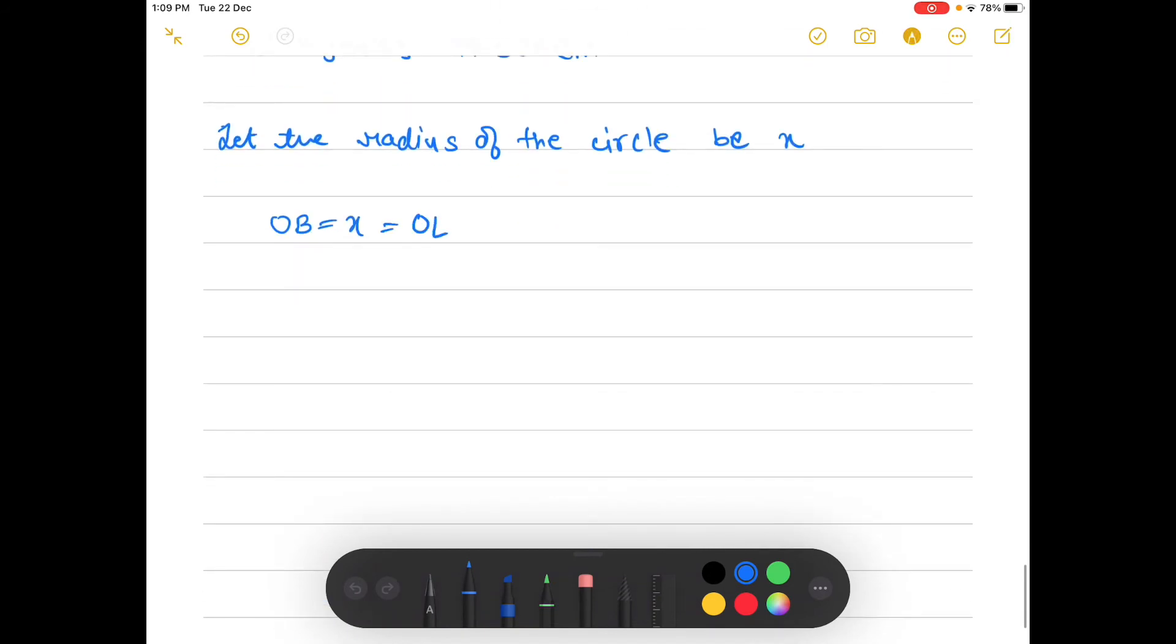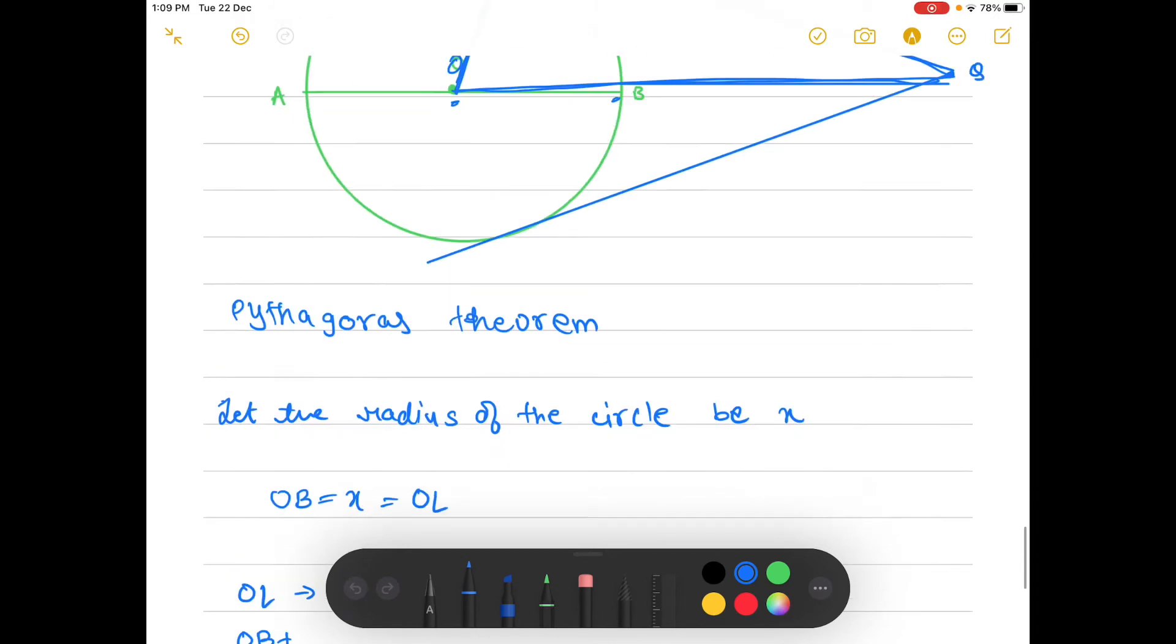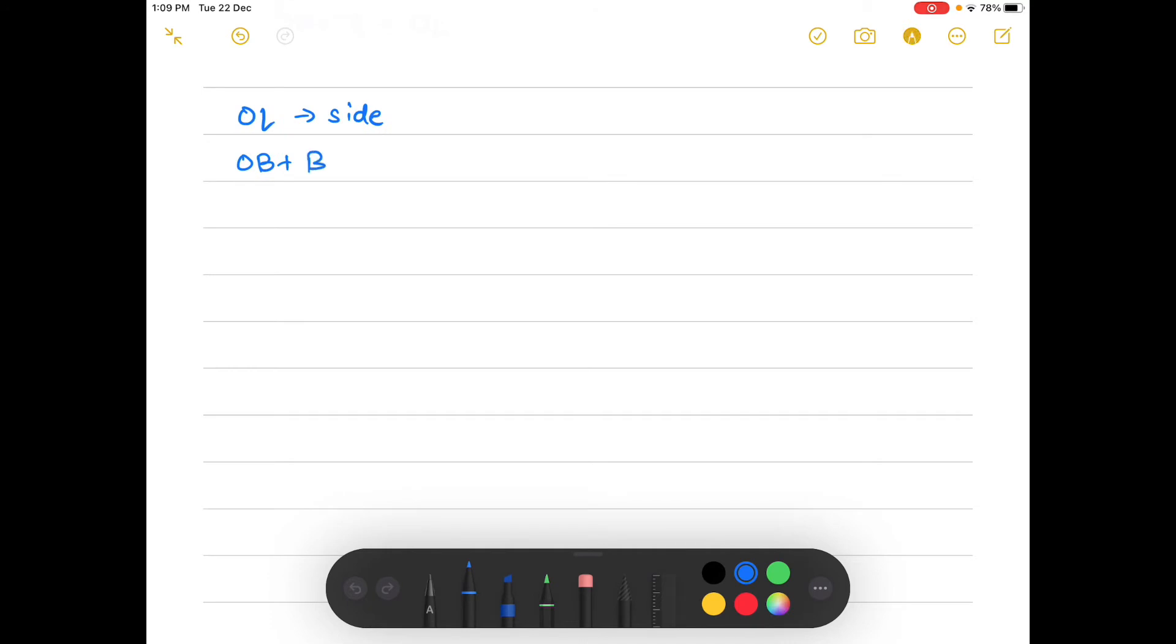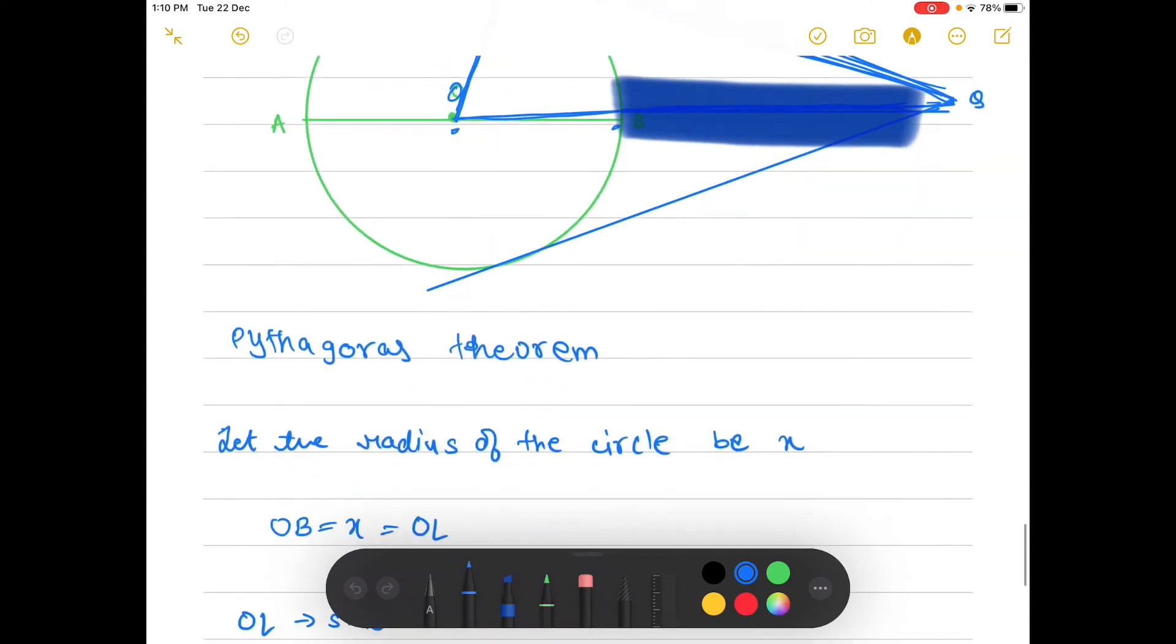So OB plus BQ is the hypotenuse, and LQ is the base.